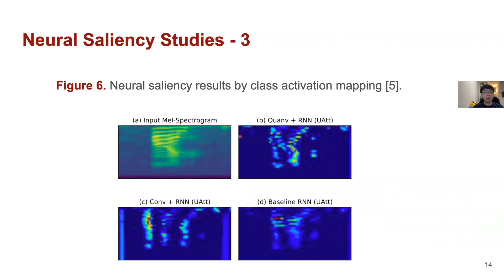We also want to see if the model really learns meaningful things. So we use class activation mapping to evaluate different models trained on different acoustic features. For example, if the model is trained on acoustic features encoded by quantum convolution, by convolution, or just a baseline model, we find that the model trained on quantum convolution has learned acoustic features correlated to the original mel-spectrogram. For example, we can see really fine details, like intensity around the acoustic phonological features.